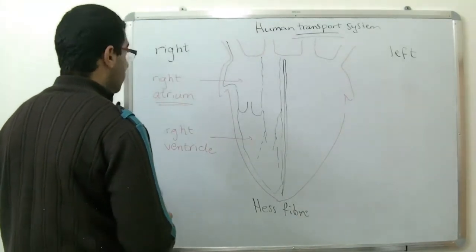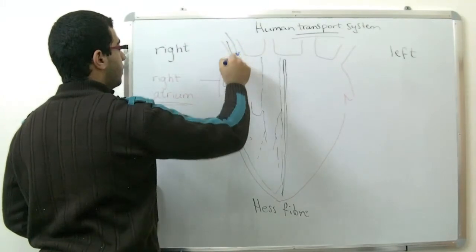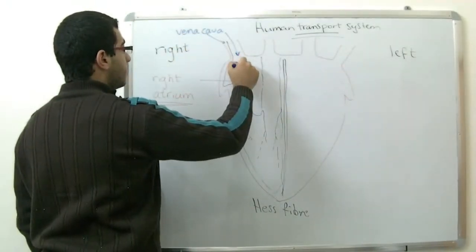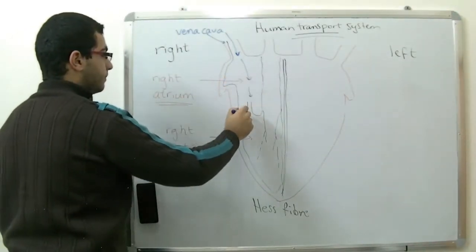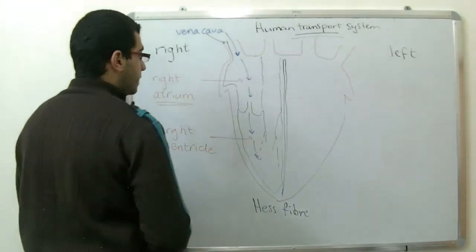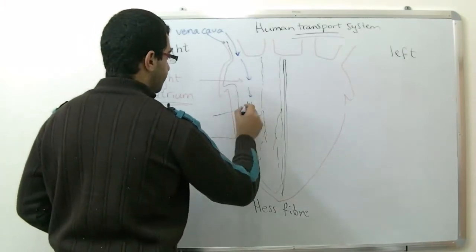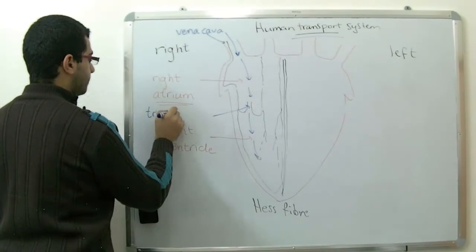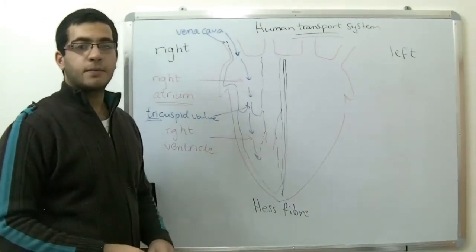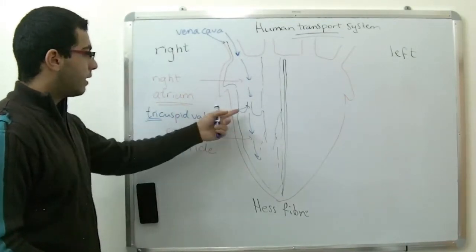The blood enters the heart through the vein called the vena cava. Then the right atrium contracts, so the blood is pumped downwards into the right ventricle. To prevent the opposite passage of the blood from the right ventricle to the right atrium, there is a valve here. This valve is called the tricuspid valve. It's called a tricuspid valve because it consists of three flaps which are joined to the muscles of the heart by tendons to prevent the flapping of the valves inside out.